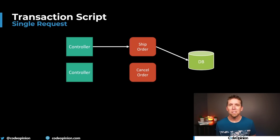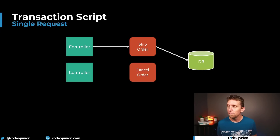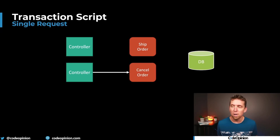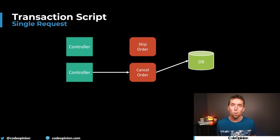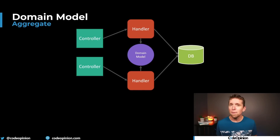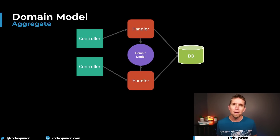Let's say we have a ship order transaction script. We do something in our database to set that order as shipped. But then another request comes in to the cancel order transaction script — that really shouldn't be able to happen based on the state of the order at that time. If we don't have that validation logic correctly when changing state — because it's just public getters and setters, just data buckets — we may change the state and cancel an order when we shouldn't have. That's when you want to encapsulate all this behavior behind a domain model so you interact with that and persist it separately.